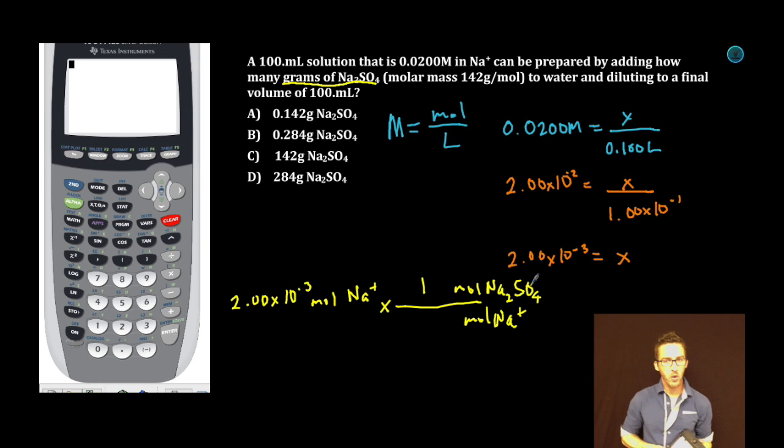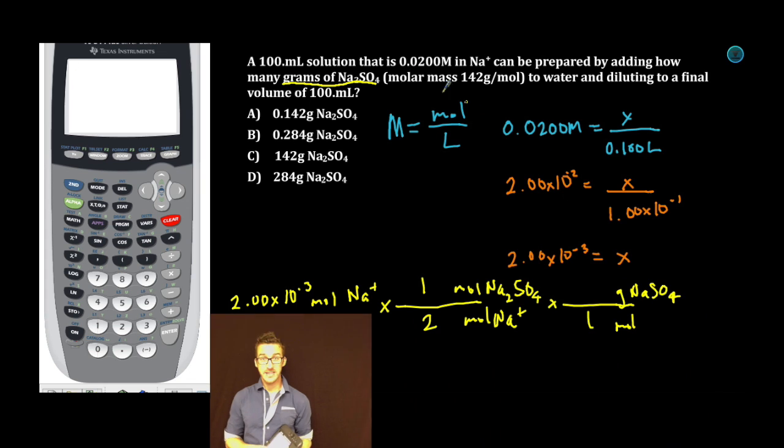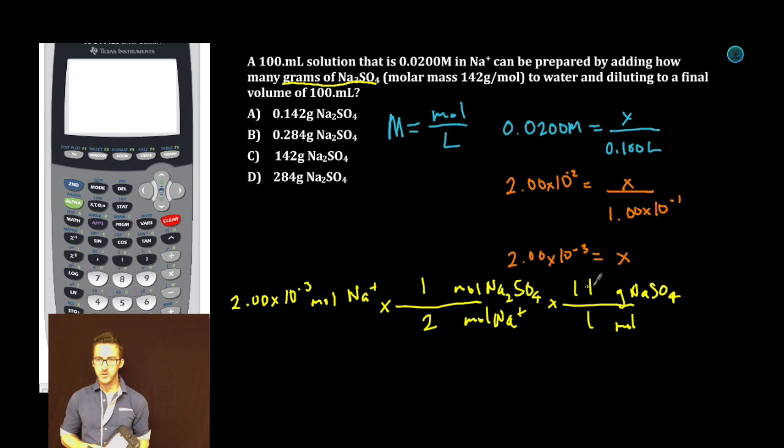For every one mole of sodium sulfate, I'm going to have two moles of sodium ion. Then we need to get to grams. We go from moles to grams of sodium sulfate. We're given that in the problem, 142 grams.